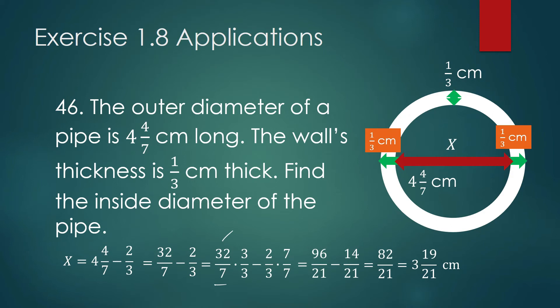96 minus 14 is 82, and 82 divided by 21 in mixed number form is 3 and 19 over 21 centimeters. How many 21s do we have in 82? We have 3, with a remainder of 19. So the inside diameter is 3 and 19 over 21 centimeters.